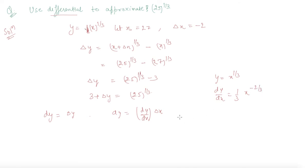So I will write dy is this into dx, dy/dx into Δx. So Δx here is minus 2. So this is 1/(3x^(2/3)) into Δx is minus 2. So this is 1/3 into 27 raised to power 2/3 into minus 2 equals minus 2/27.